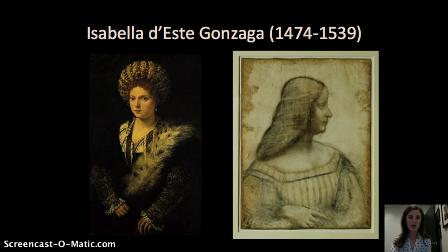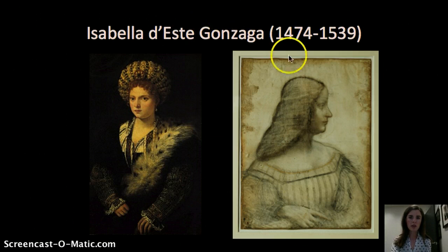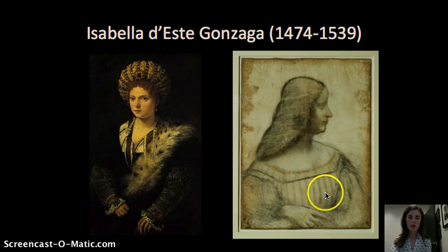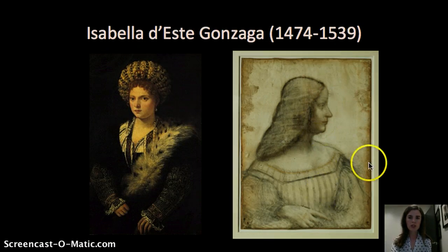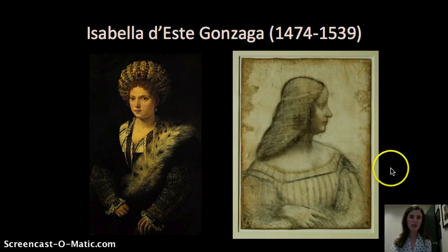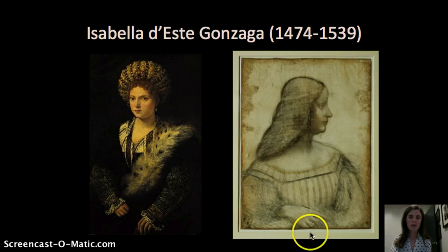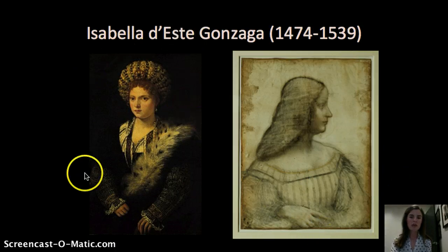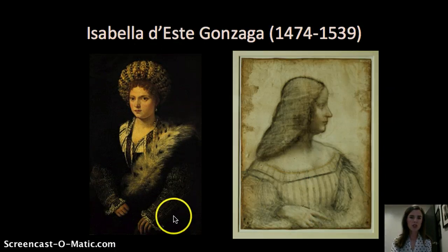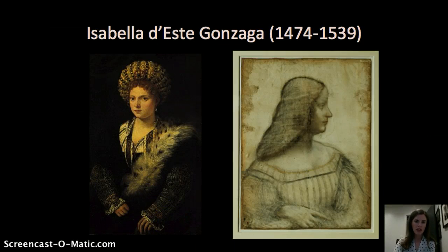Her dates are on the screen and I include two portraits. One is the Leonardo portrait that we saw in the previous lecture, by Leonardo da Vinci, on the right side here. The other is the image by Titian created in the 1530s, so well into Isabella's life — she was towards the end of her life at that point.